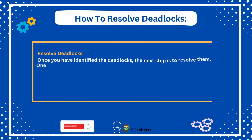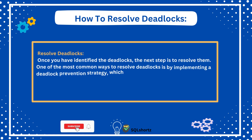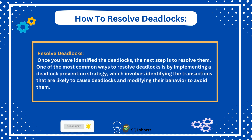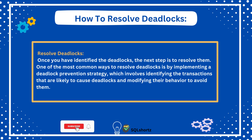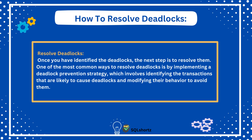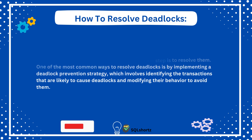The second one is to resolve deadlocks. Once you have identified the deadlocks, one of the most common ways to resolve them is by implementing a deadlock prevention strategy, which involves identifying the transactions that are likely to cause deadlocks and modifying their behavior to avoid them.